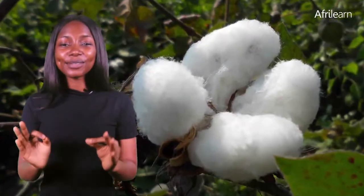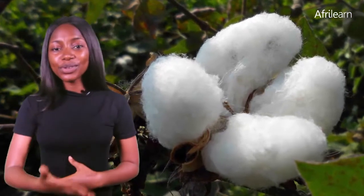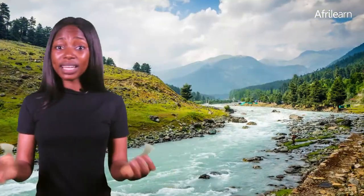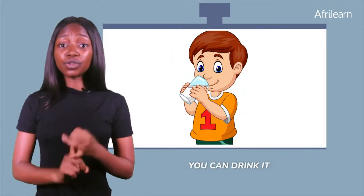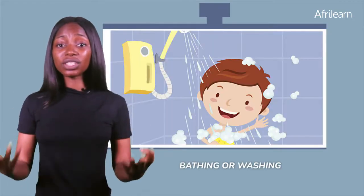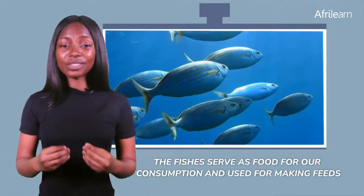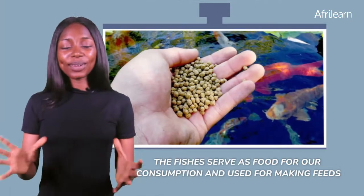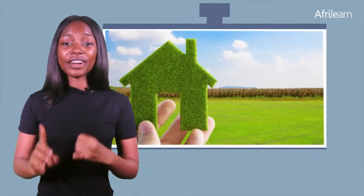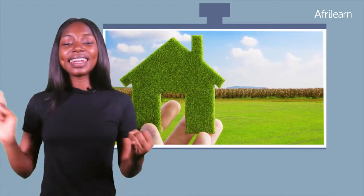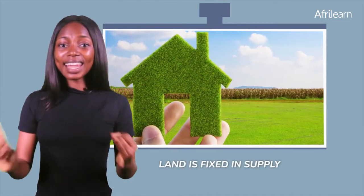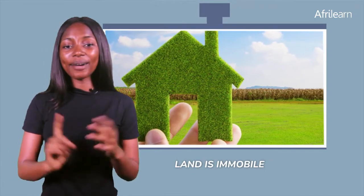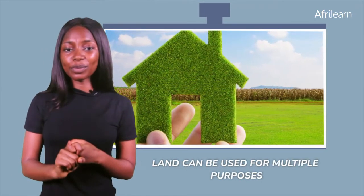The materials gotten from land can be used for various purposes. For example, river water you can use to cook, drink, or use for washing. The fishes in the river can be used for consumption or to make feeds. So land is characterized by a number of things: land is fixed in supply, land is immobile, and land can be used for multiple purposes.